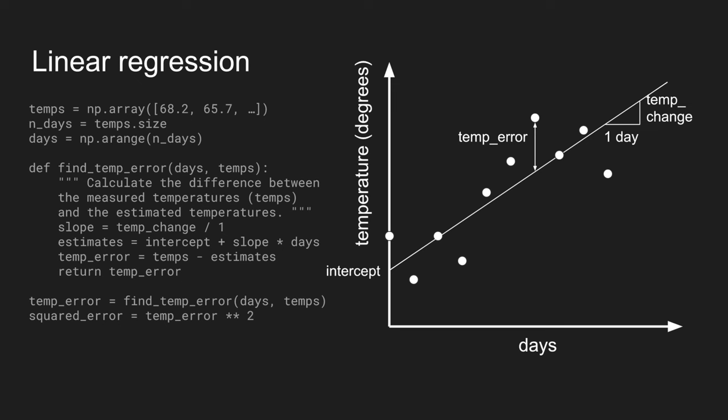Now, it is a characteristic of the best fit line that it takes all of those deviations, all of those temp errors, and minimizes the sum of the square of them. If you take them all, square them all, and add them up, that quantity is minimized by this best fit line.